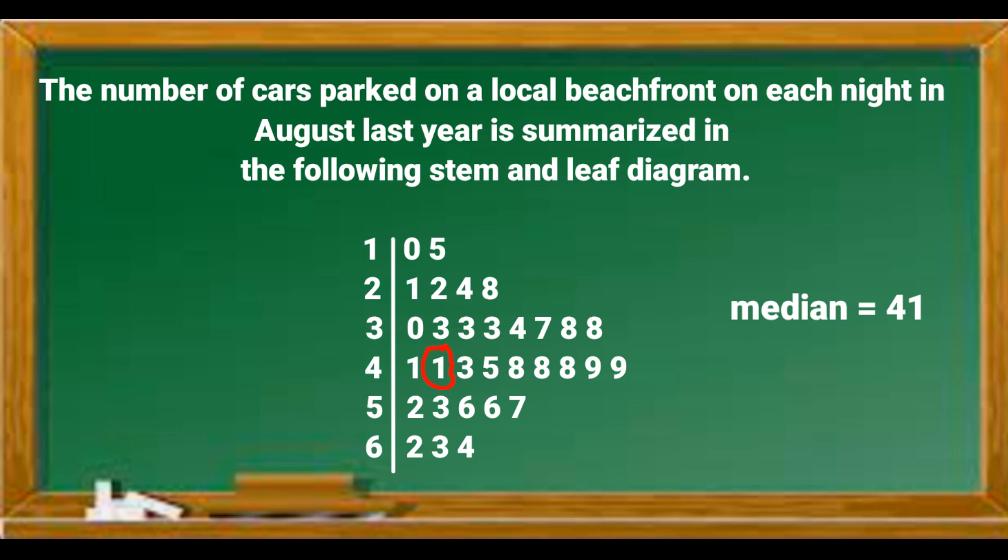The lower half of the data consists of 15 terms. To calculate the middle of this data, we add 1 to 15 and divide by 2. This will give the 8th term.